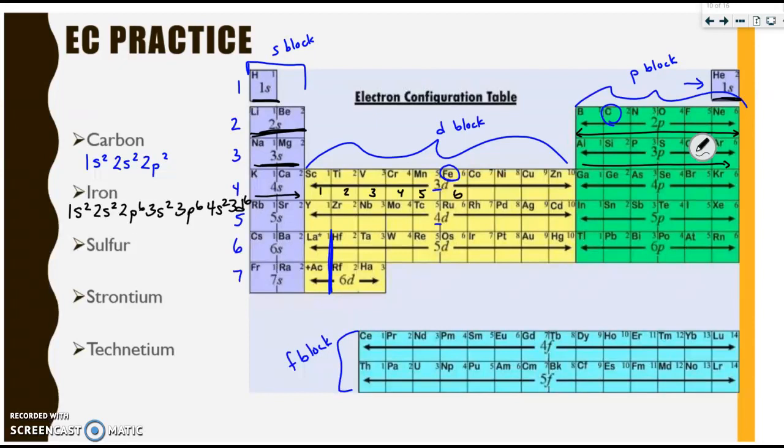And to double check yourself, you can always add up the superscripts here. And when you add those superscripts together, you should end up with the atomic number. When we add all of those together, we get 26, which is iron's atomic number. At this time, please pause the video and attempt the additional three practice problems.